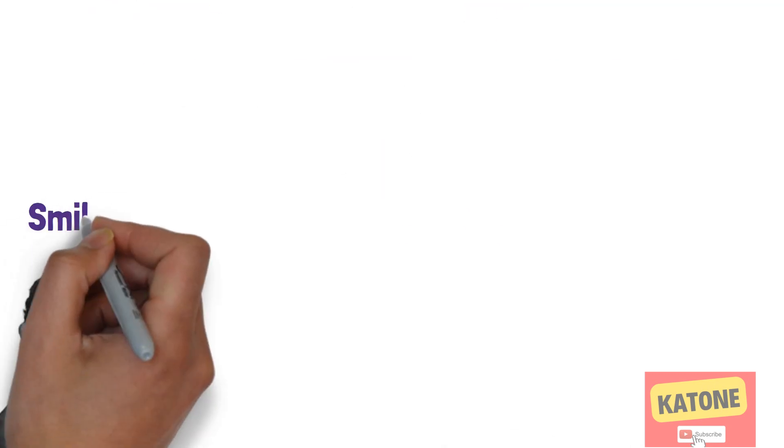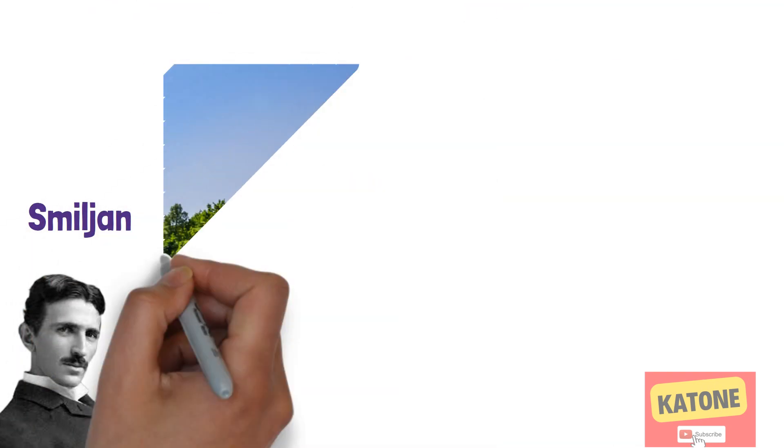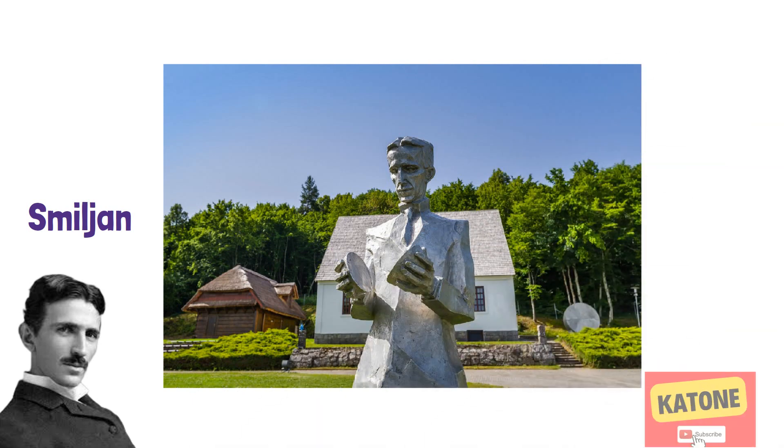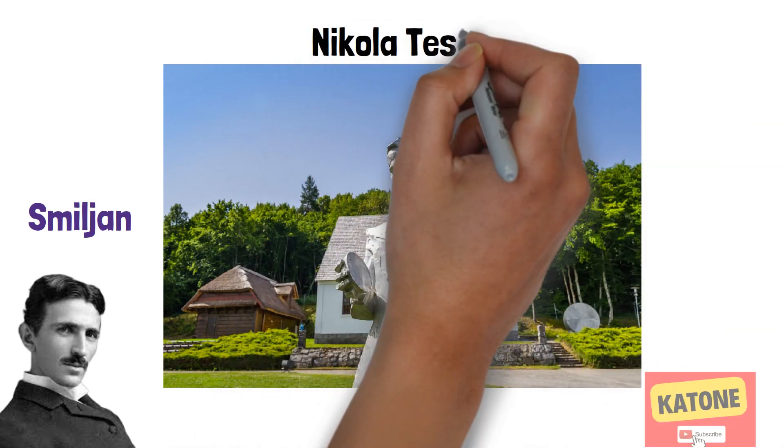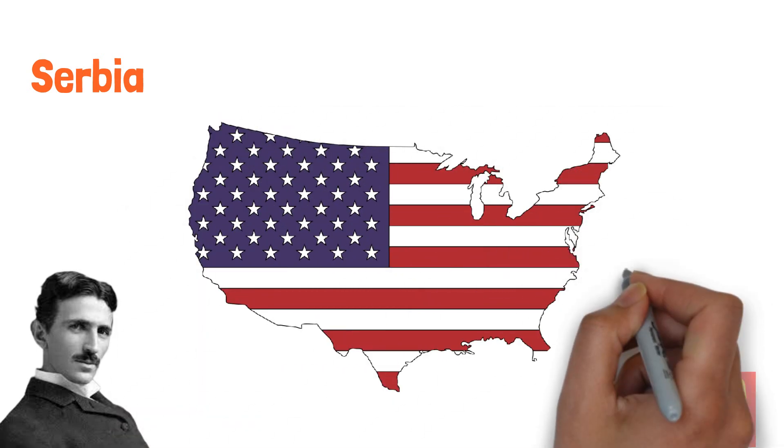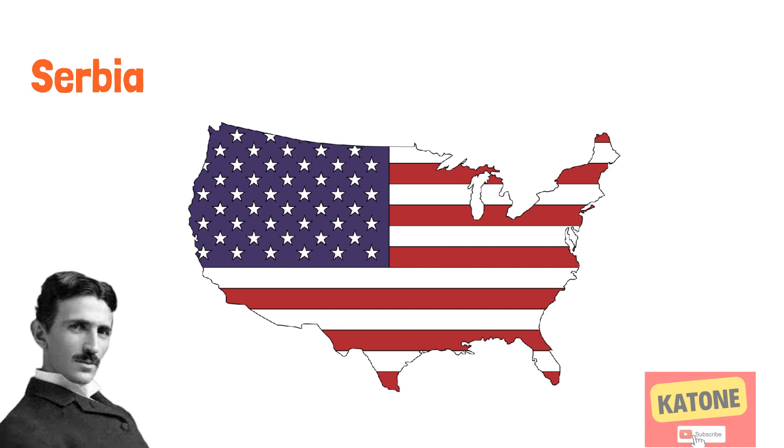Once upon a time in a small village called Smiljan, a brilliant scientist and inventor named Nikola Tesla was born on July 10, 1856. He was from Serbia, but he later became a citizen of the United States.